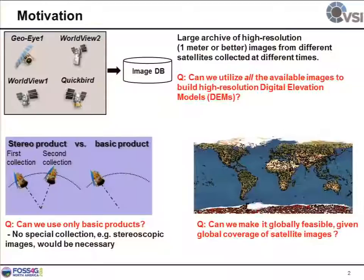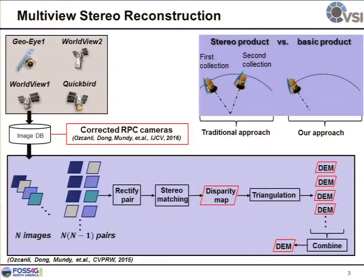For the entire world, we only have the basic products — the raw satellite images that cover the entire world. We proposed some kind of solution, and there are a lot of details I don't want to discuss, but the basic problem is that because we have images collected from different satellites, they have different geo-positioning errors, or other errors due to camera calibration or unstable satellite motion.